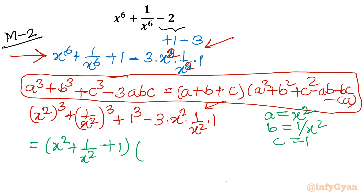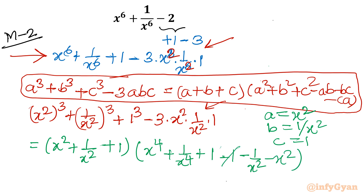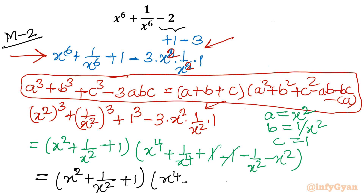In the second bracket: a² is x⁴, b² is 1/x⁴, c² is 1. Then minus ab: x² times 1/x² cancels to give minus 1. Minus bc: minus 1/x². Minus ca: minus x². Now plus 1 and minus 1 cancel easily, so the factorization is: (x² + 1/x² + 1)(x⁴ + 1/x⁴ - x² - 1/x²). That is the third way.